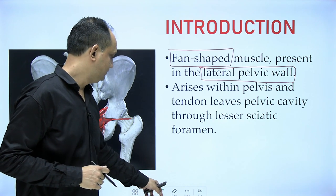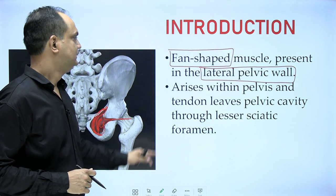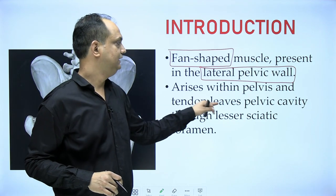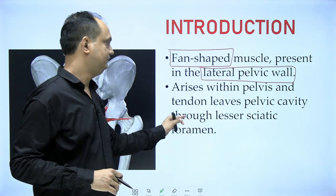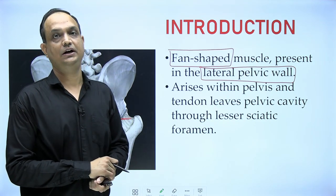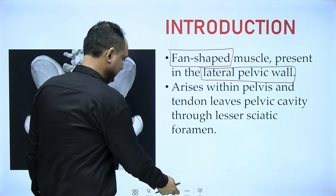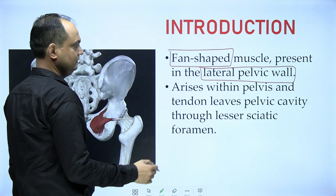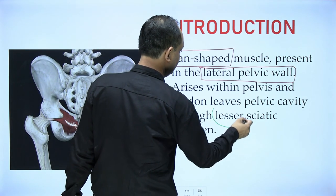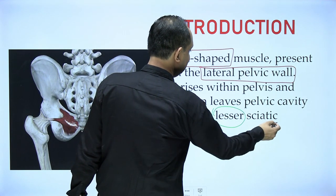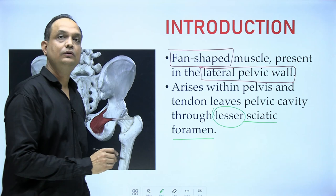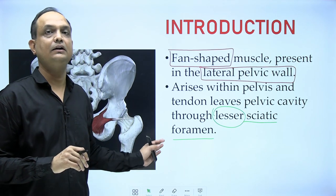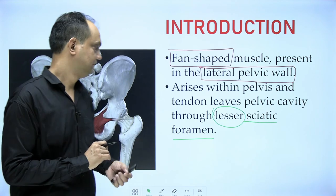The origin of this muscle is within the pelvis, and the tendon leaves the pelvic cavity through the lesser sciatic foramen. This is an important exam question asked many times: when talking about the lesser sciatic foramen, there is an important exit from the pelvis, and that is the tendon of obturator internus.